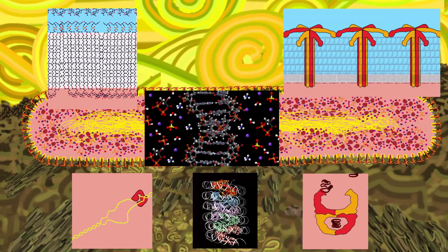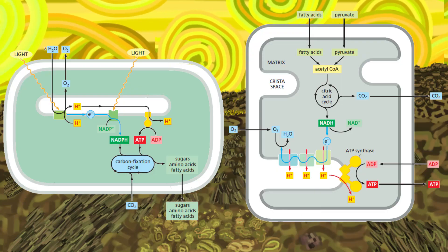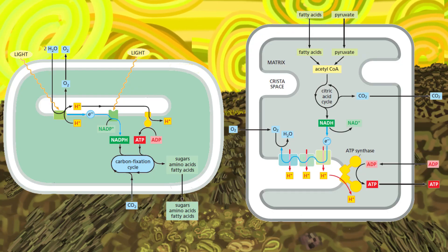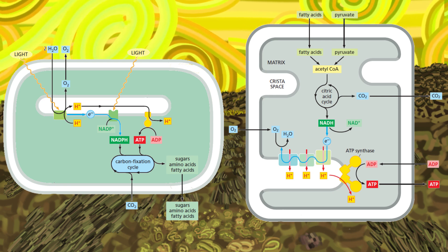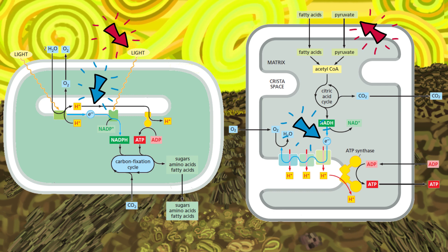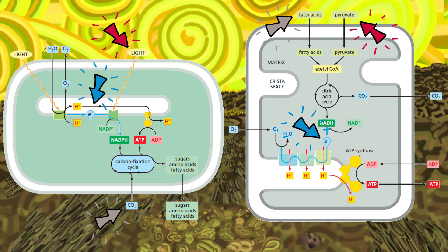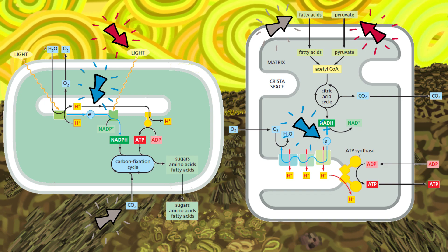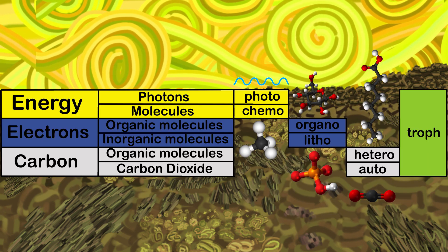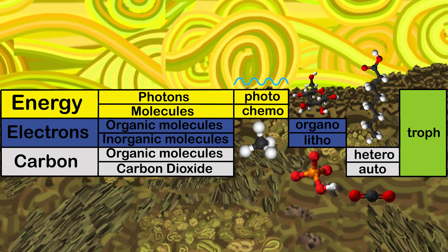Now let's think about what type of metabolism is more appropriate. In every metabolism there are three essential characteristics for life to be possible. A source of energy. An electron source. And a carbon source. And it is these three characteristics with which organisms are metabolically classified.